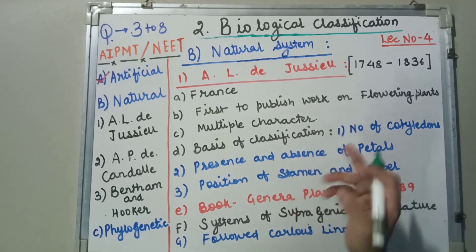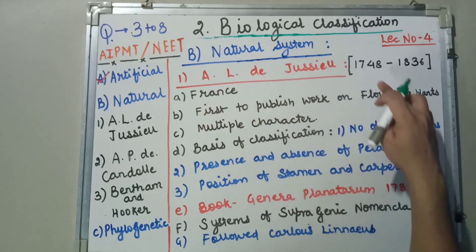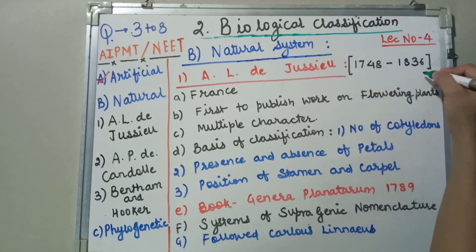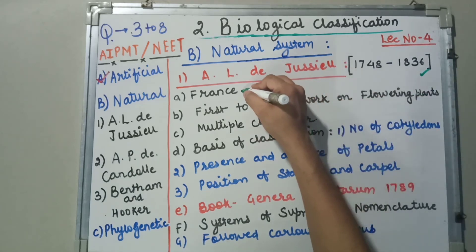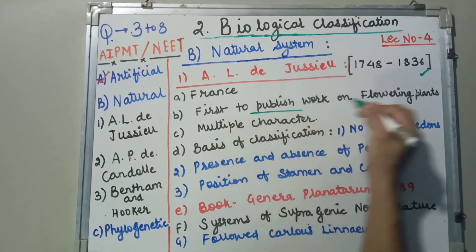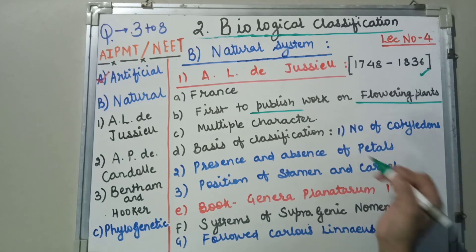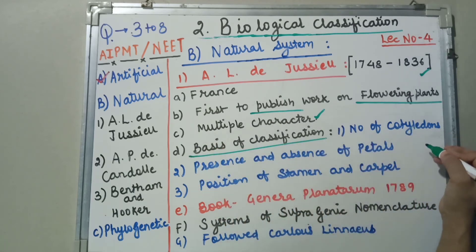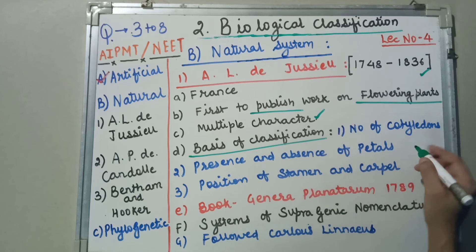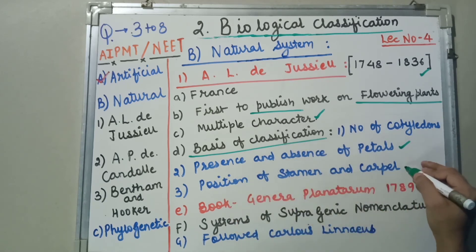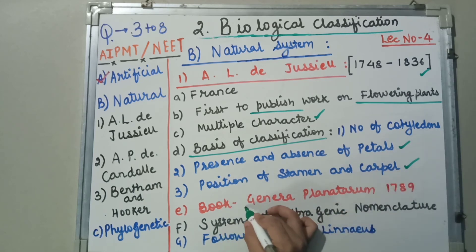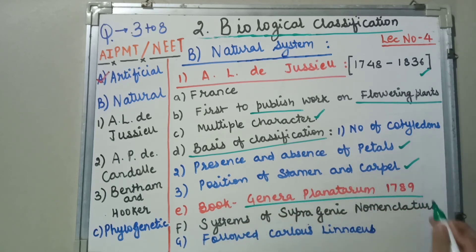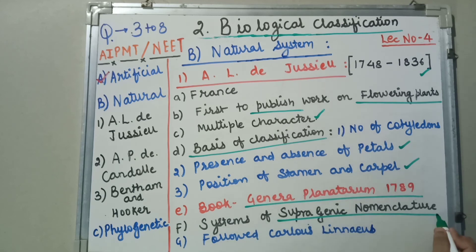To quickly revise: ALD Jussieu's time period is 1748 to 1836. He belonged to France and was the first one to publish his work on the basis of flowering plants. He considered multiple characters including number of cotyledons, presence and absence of petals, and position of stamen and carpel. He wrote the book Genera Plantarum, published in 1789, and gave the system of supragenic nomenclature, following Carolus Linnaeus.